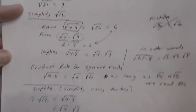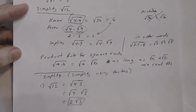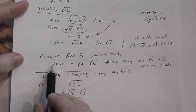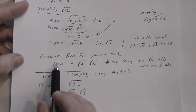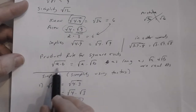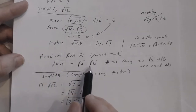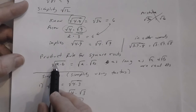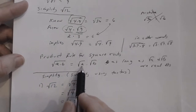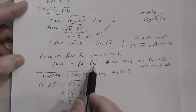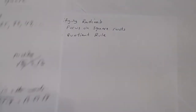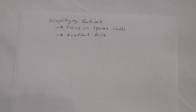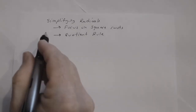Just a reminder — the product rule basically said this: when you have a square root of a product of factors, you can rewrite this expression as the product of the square root of every factor. So the square root of a times b is the square root of a times the square root of b. Now let's talk about the quotient rule.